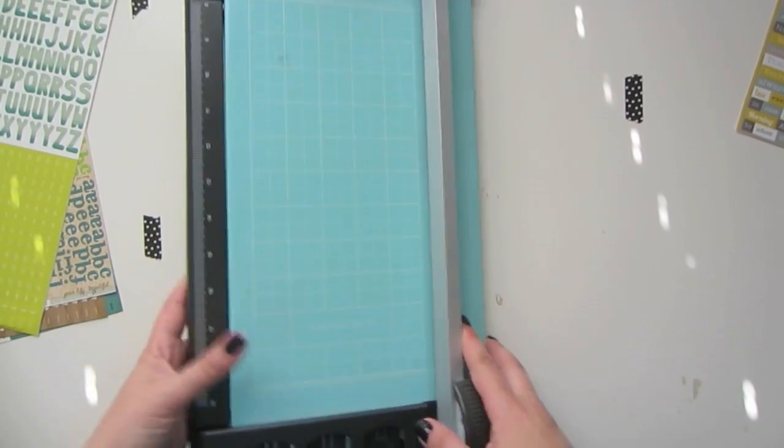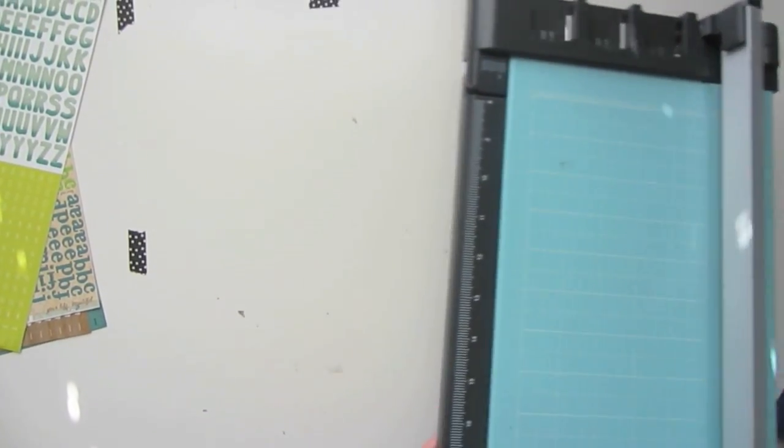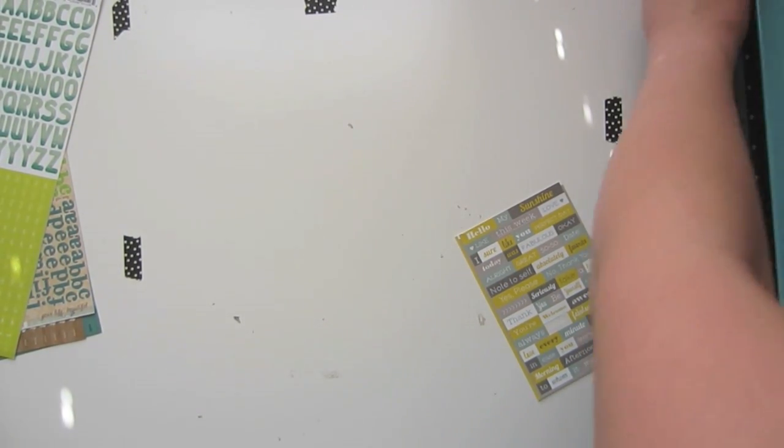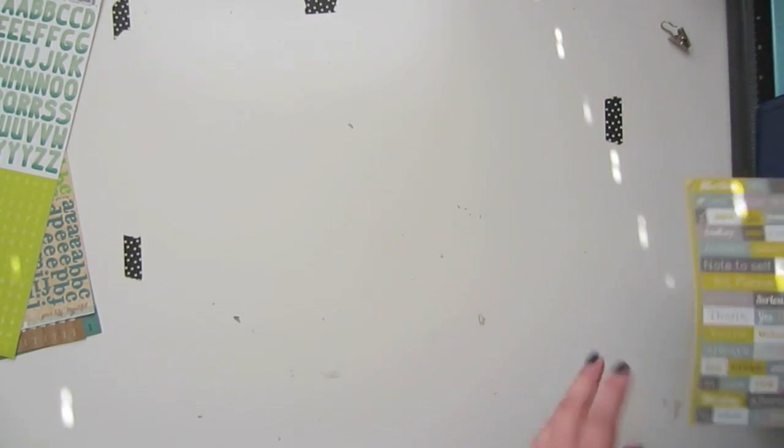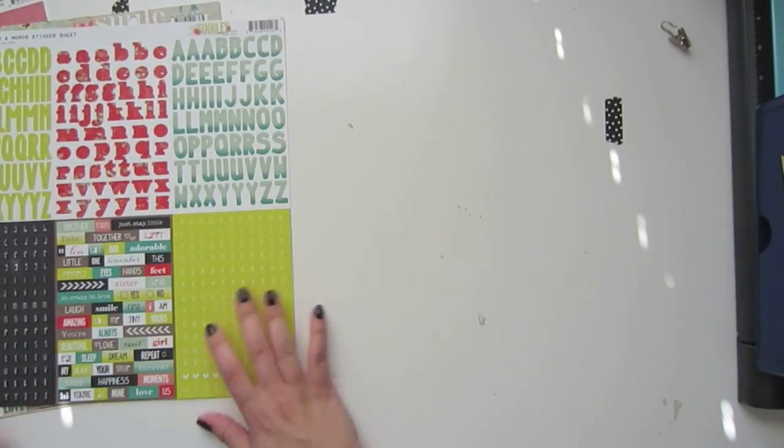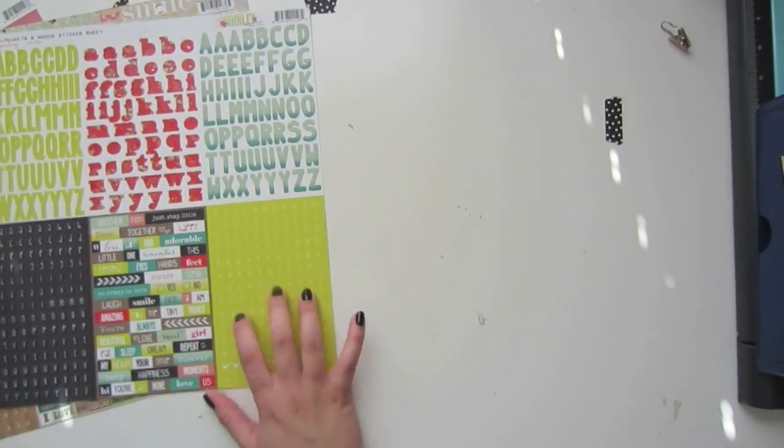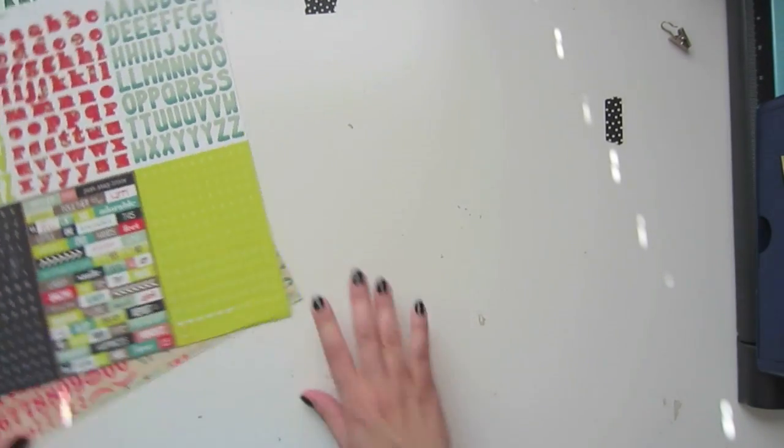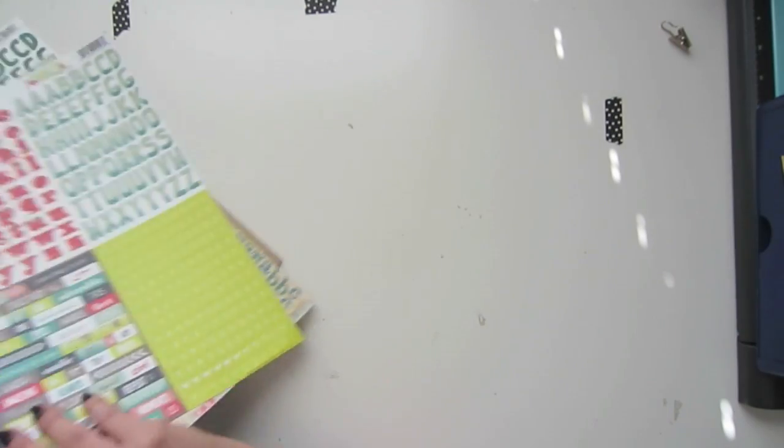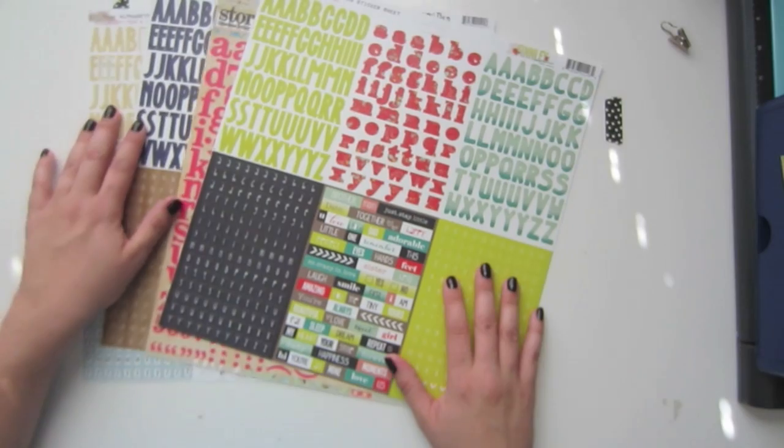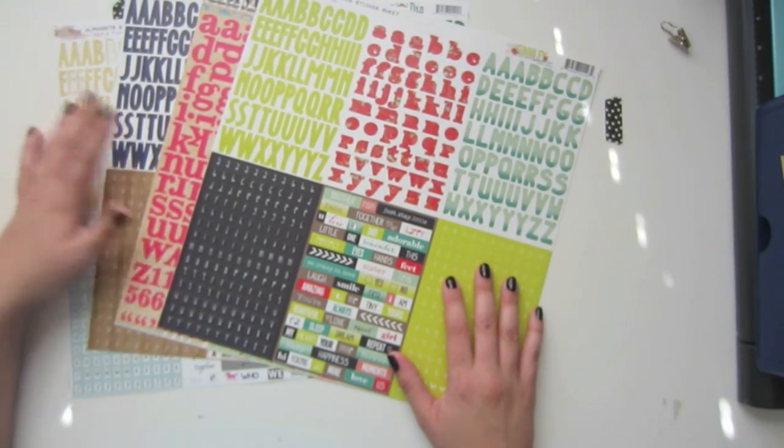So those are all the alphas that I use on a regular basis for my Project Life. I do have some die cuts and some stamps that I will be showing in another Stash Chat video. I just didn't want this one to be too long because this one is mostly focusing on just my sticker alphas, and that's what I get a lot of questions on. But don't forget that there are die cuts and stamps that you can use for alphas as well. So you don't necessarily have to have a huge collection of sticker letters if you have die cuts and stamps. But we'll go into that in another video.